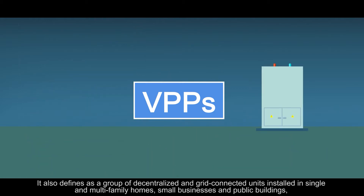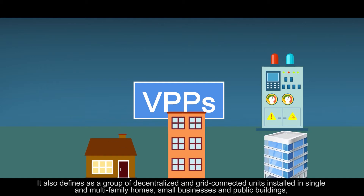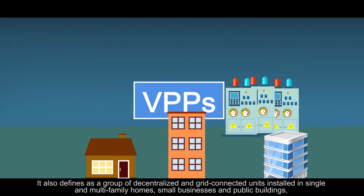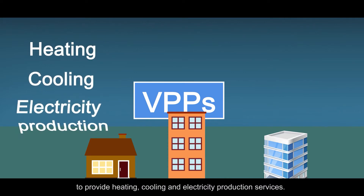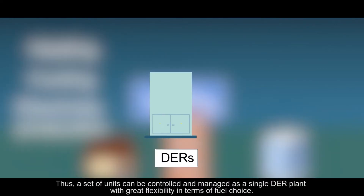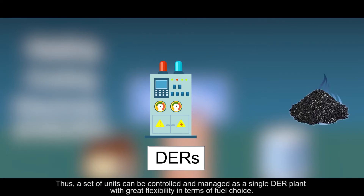Virtual power plants are also defined as a group of decentralized and grid-connected units installed in single and multi-family homes, small businesses, and public buildings, to provide heating, cooling and electricity production services. Thus, a set of units can be controlled and managed as a single distributed energy resource plant with great flexibility in terms of fuel choice.